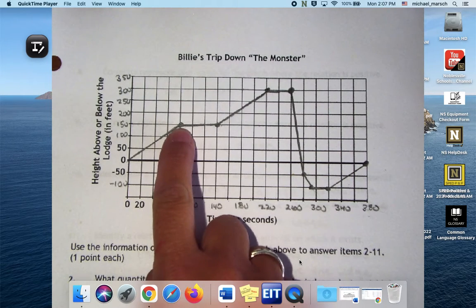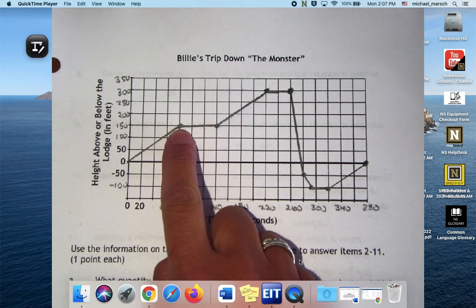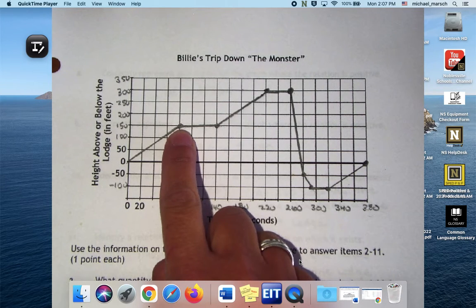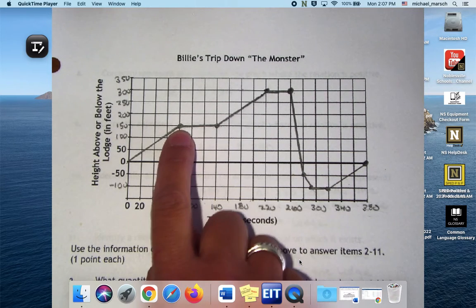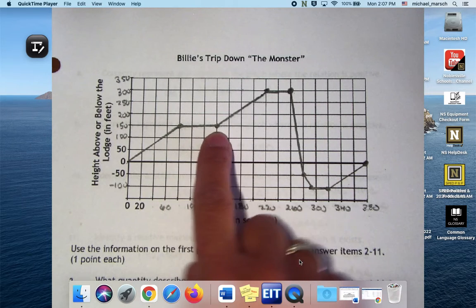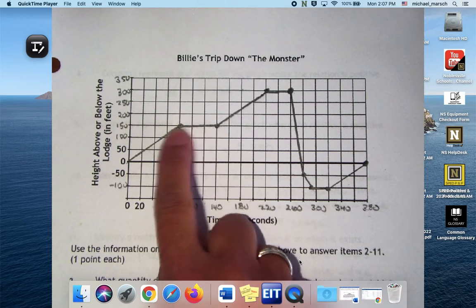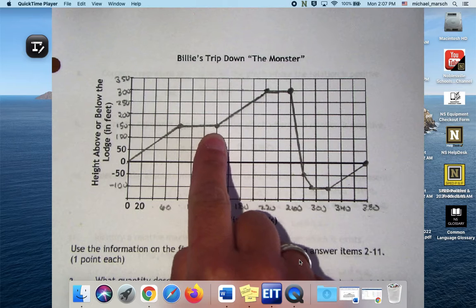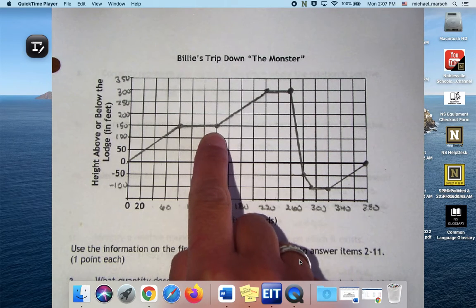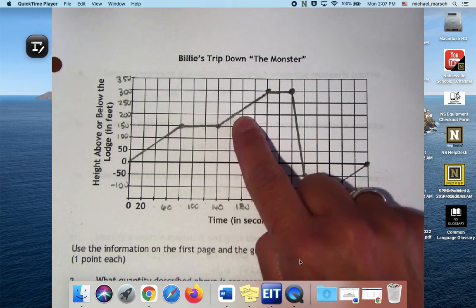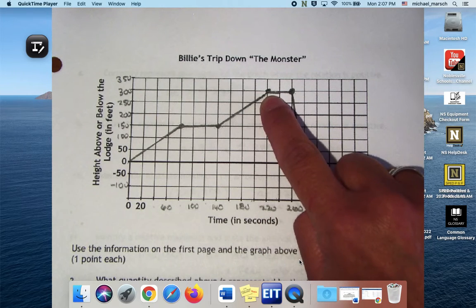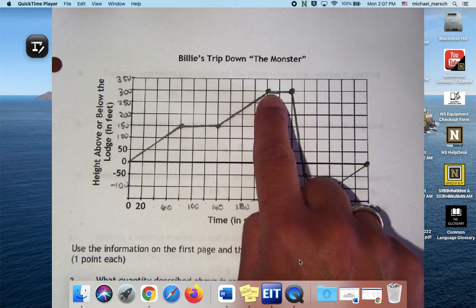Next she had to wait 60 seconds for a free seat on lift 2, so she's still at 150 feet above the ski lodge. She took lift 2 to the top of the monster. This trip took another 80 seconds to climb another 150 feet to the top, so now she's at 300 feet.